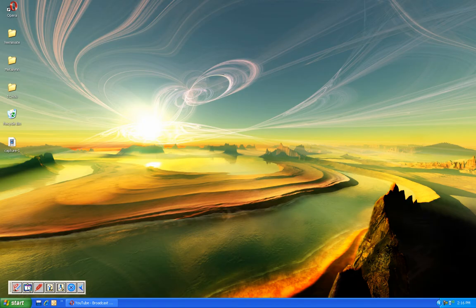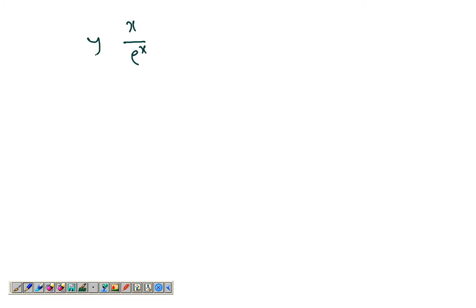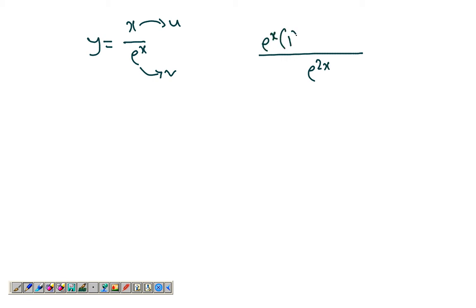Let's take another example: x over e to the x. So this is u, this is v. The square of the function in the denominator gives you e to the power 2x. This remains as is, derivative of u is 1. Take away the function in the numerator times the derivative of e to the power x, which gives it back. So you have the answer.